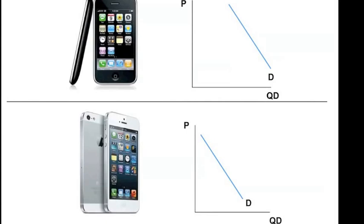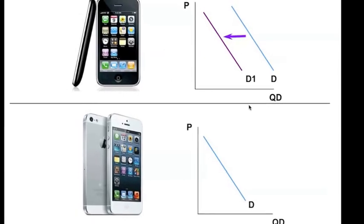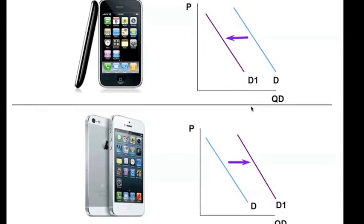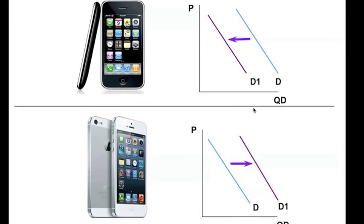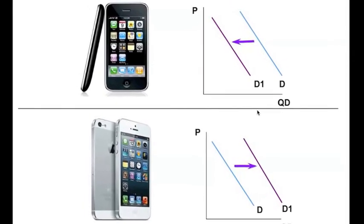Graphically, if we think there's a new iPhone coming out, then we might hold back our consumption and see a shift to the left in the demand curve for the old iPhone, and a shift to the right for the new iPhone.